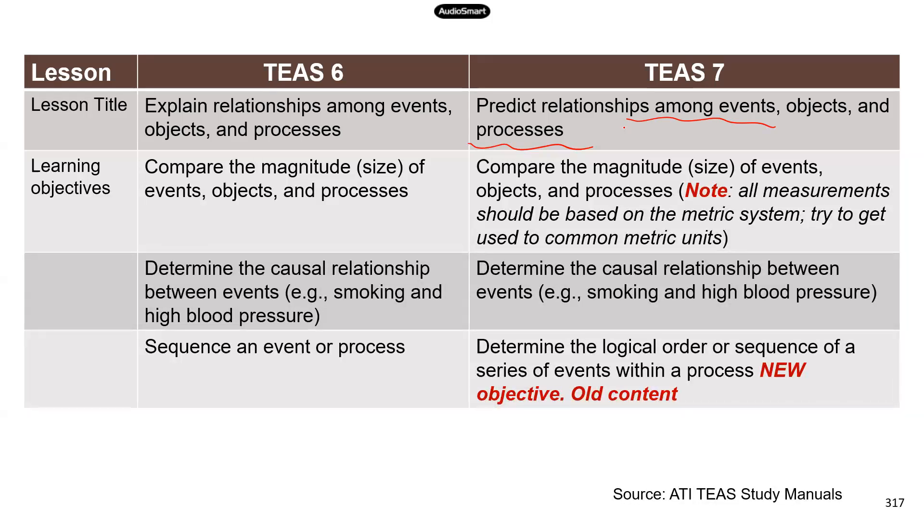Okay, now the title is the same in TEAS six and TEAS seven. And really just, you know, instead of explain, you are going to predict, which is a more accurate description of what questions you will see on TEAS, right? You're predicting the order or the relationship, you're not trying to explain anything. Now, the first learning objective is very similar. You are comparing the magnitude of different events, objects and processes.